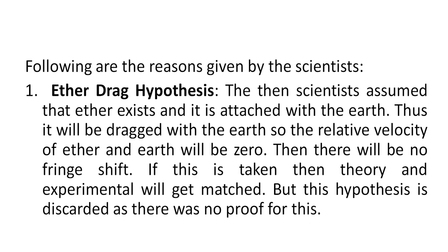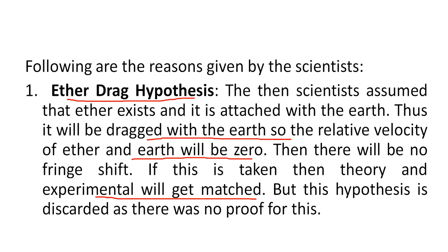Following are the reasons given by the scientists. The number one reason was the Ether Drag Hypothesis. The scientists assumed that ether exists and is attached with the earth, so it will be dragged with the earth, making the relative velocity of ether and earth zero. For example, if you are travelling in a train, the relative velocity of you with respect to the train is zero because both have the same velocity. Similarly, if ether is attached with the earth, there will be no fringe shift, and theory and experimental results will match. But this hypothesis was discarded as there was no proof for it.